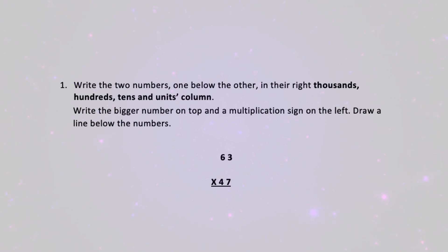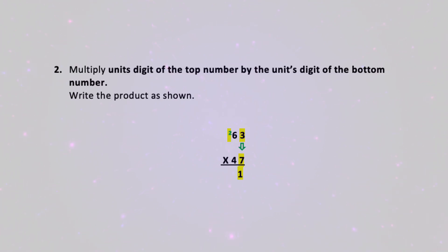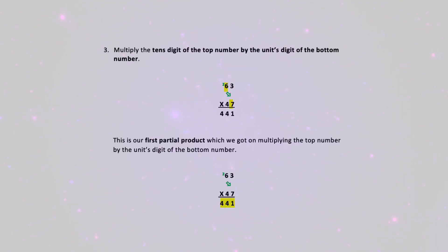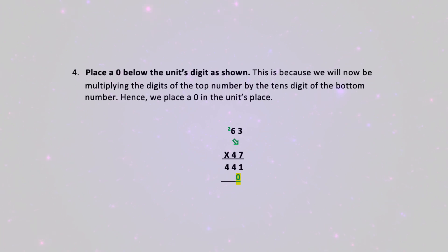Draw a line below the numbers. Step 2: multiply the units digit (or ones digit) of the top number by the units digit (or ones digit) of the bottom number, and write the product as shown. Step 3: multiply the tens digit of the top number by the units digit of the bottom number. This is our first partial product, obtained by multiplying the top number by the units digit of the bottom number.